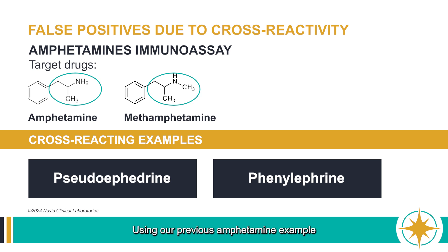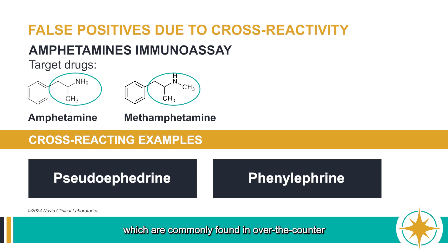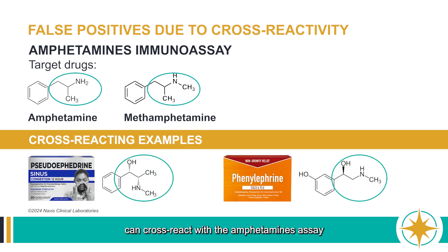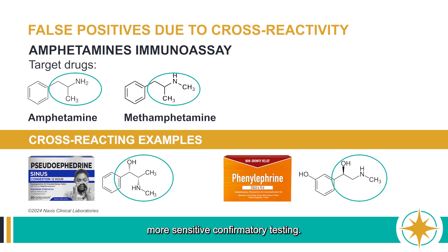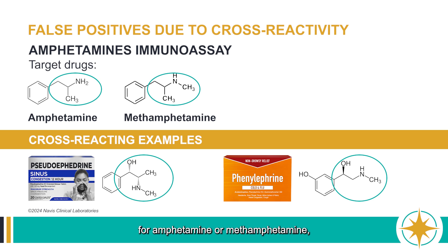In our previous amphetamine example, pseudoephedrine and phenylephrine, which are commonly found in over-the-counter cough and cold medications, can cross-react with the amphetamines assay and show a positive test for amphetamine. In circumstances like this, if a patient says they did not take amphetamine but they have taken cough and cold medications, the sample could be sent for more sensitive confirmatory testing. If it shows a negative result for amphetamine or methamphetamine, we can assume that it was an over-the-counter medication that caused the false positive.